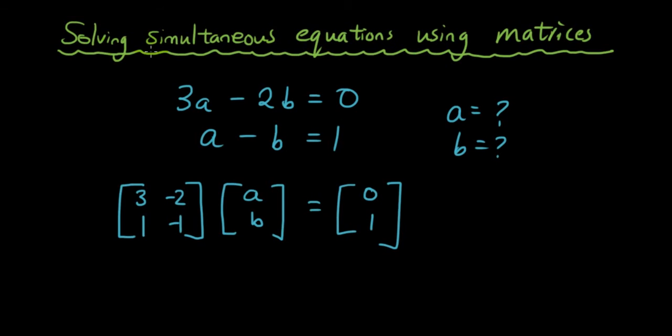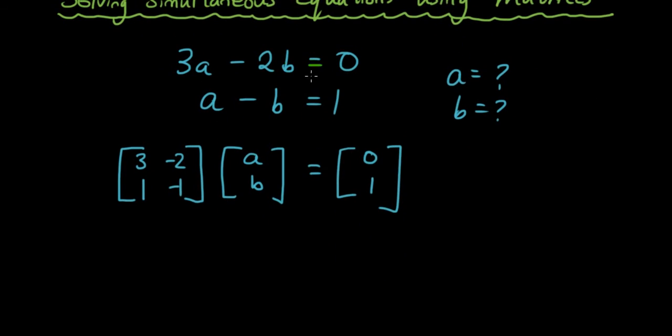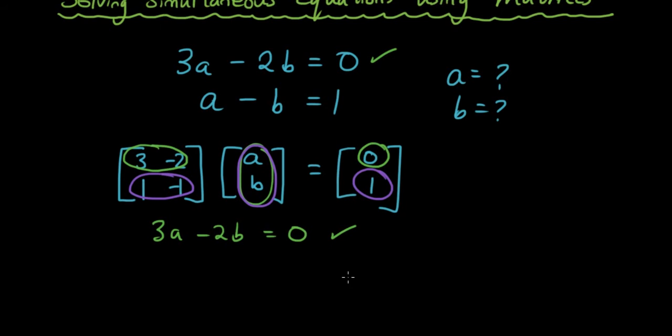Then what this means is pretty much exactly the same as the equation. Because let's multiply this out using matrix multiplication. We have the first row times by the first column so that's 3a minus 2b which equals 0. So that is the same as our first equation. And if we do the second one, we have the first row times by the first column which equals 1a minus 1b equals 1. So again that is the same equation.